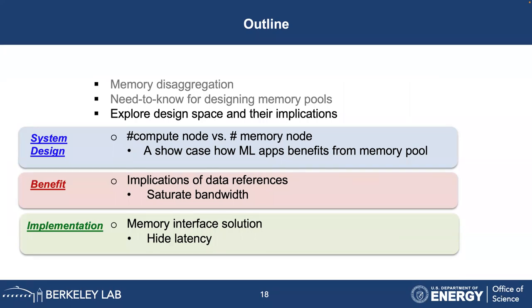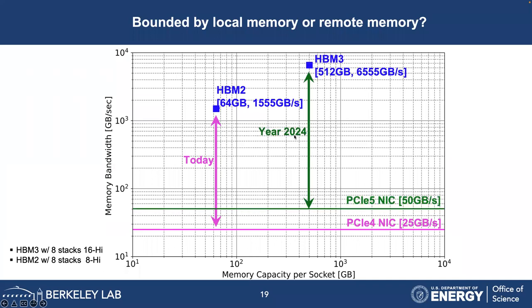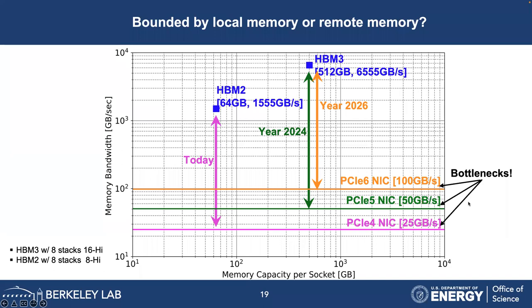We have various kinds of applications, so let's discuss what kinds would benefit and what the performance penalty would be. Looking at memory capacity and bandwidth: today we have HBM2 as local memory and PCIe4 NIC; in 2024, HBM3 and PCIe5 NIC; in 2026, HBM3 and PCIe6 NIC. There's a large gap between local memory bandwidth and network bandwidth — the network will definitely be the bottleneck. The key question is: how will memory disaggregation change how we handle data? Can you operate at HBM speed and avoid being bounded by the PCIe NIC?